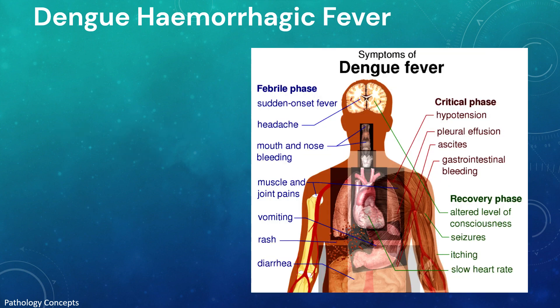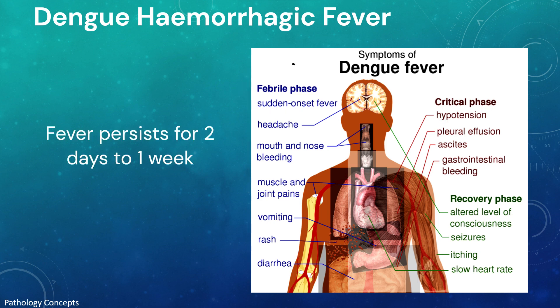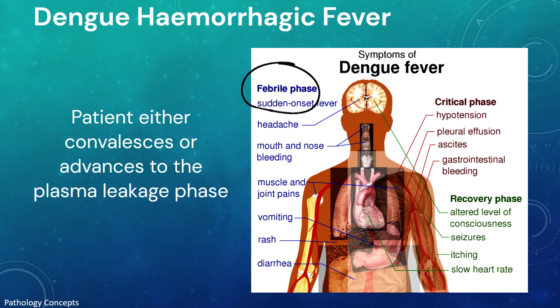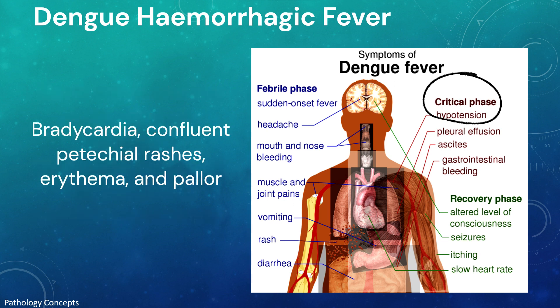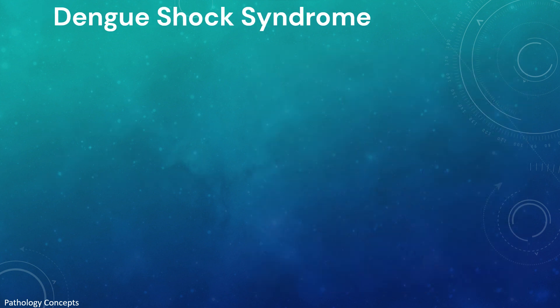The clinical course of DHF is characterized by three phases: febrile, leakage, and convalescent. The fever stage persists for two days to one week, then drops to normal or subnormal levels, and the patient either convalesces or advances to the plasma leakage phase. High plasma escape cases are marked by frank shock, low pulse pressure, cyanosis, hepatomegaly, pleural and pericardial effusion, and ascites.